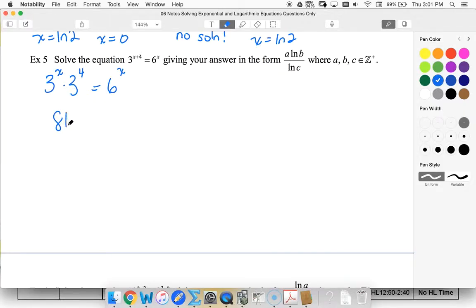So, 3 to the 4 is 81 equals 6 to the x divided by 3 to the x. Well, that's the same as 6 over 3 to the x, so of course that's the same as 2 to the x. So, 2 to the x is equal to 81.